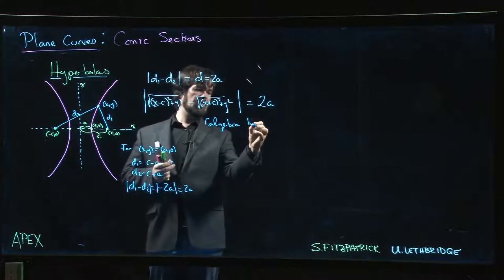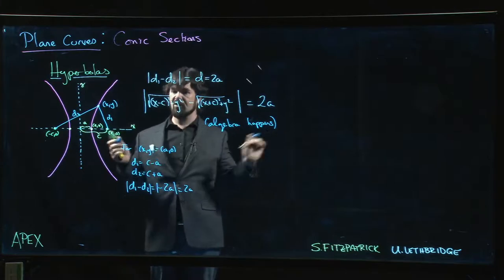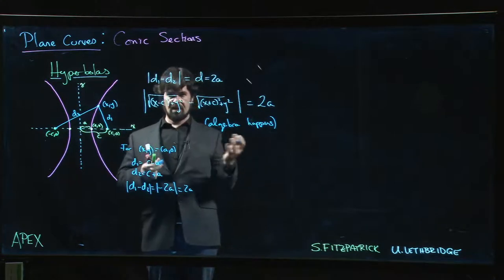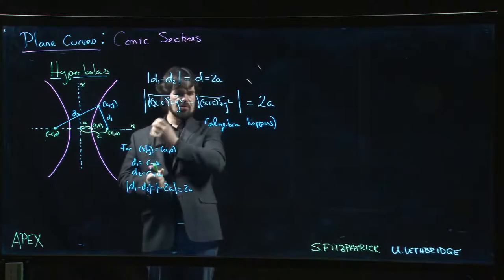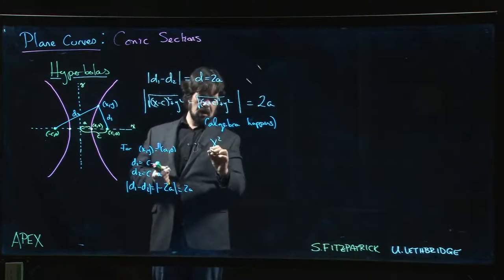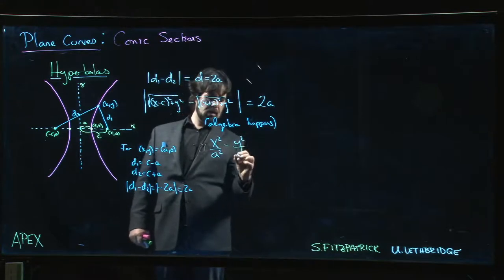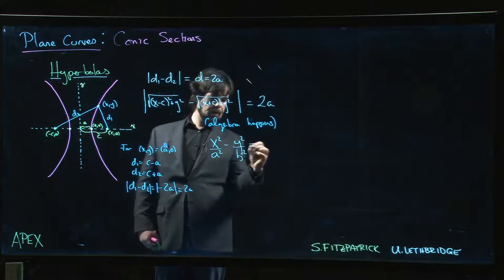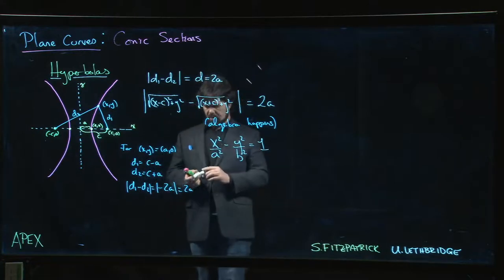Just like for the ellipse, we get to this point, algebra happens. I'll spare you the algebra—you can try it yourself if you want. Probably start by squaring both sides, be careful to watch out for extraneous solutions, but some algebra happens and you will get down to something that looks like x²/a² - y²/b² = 1.